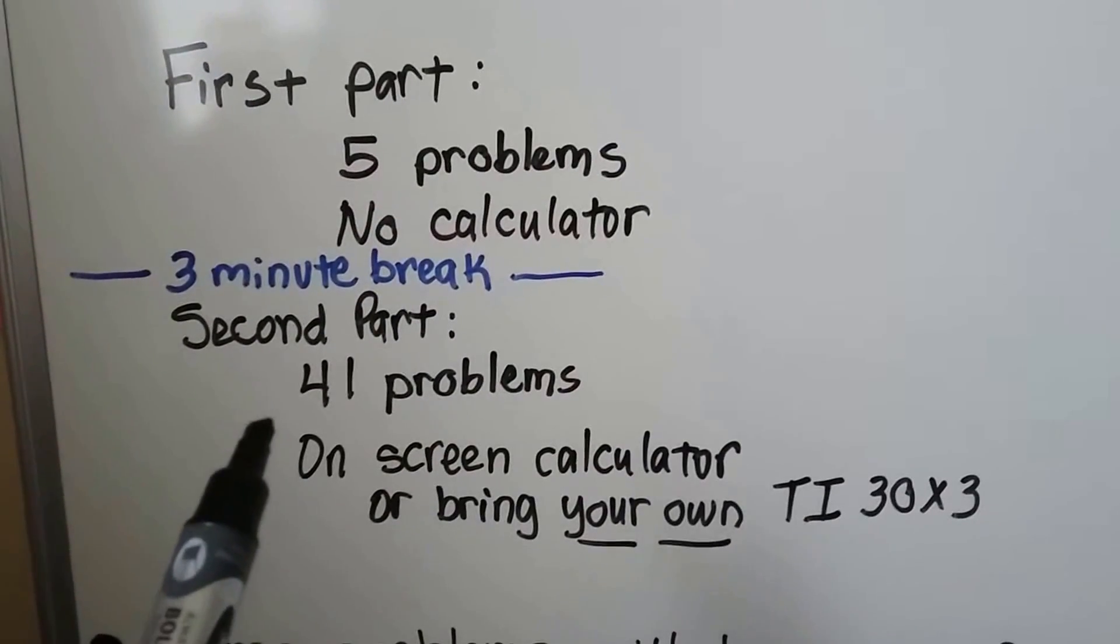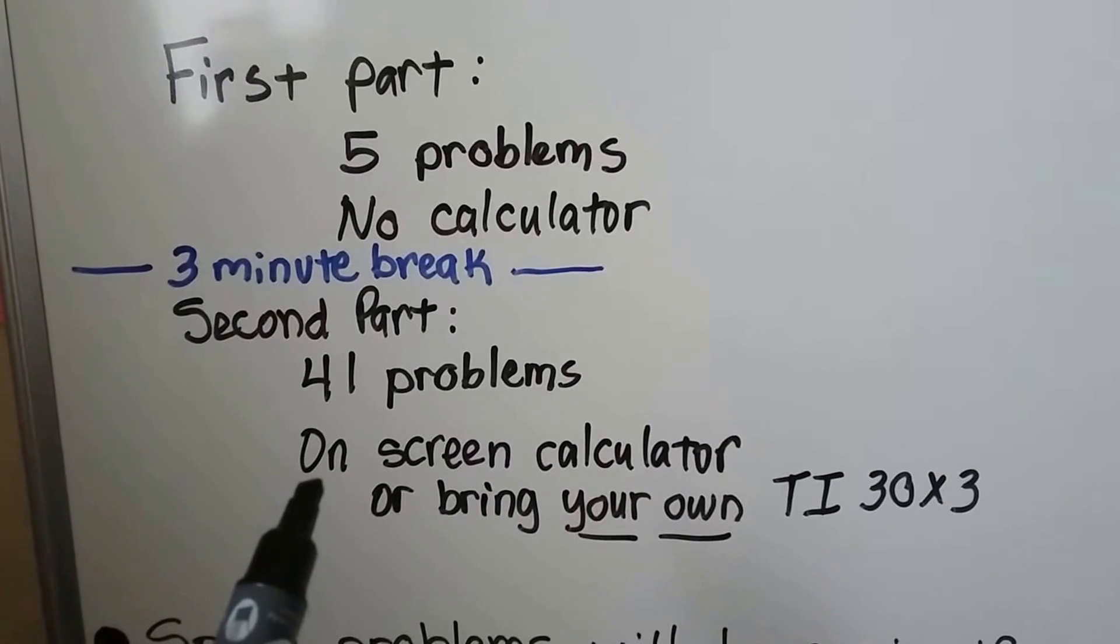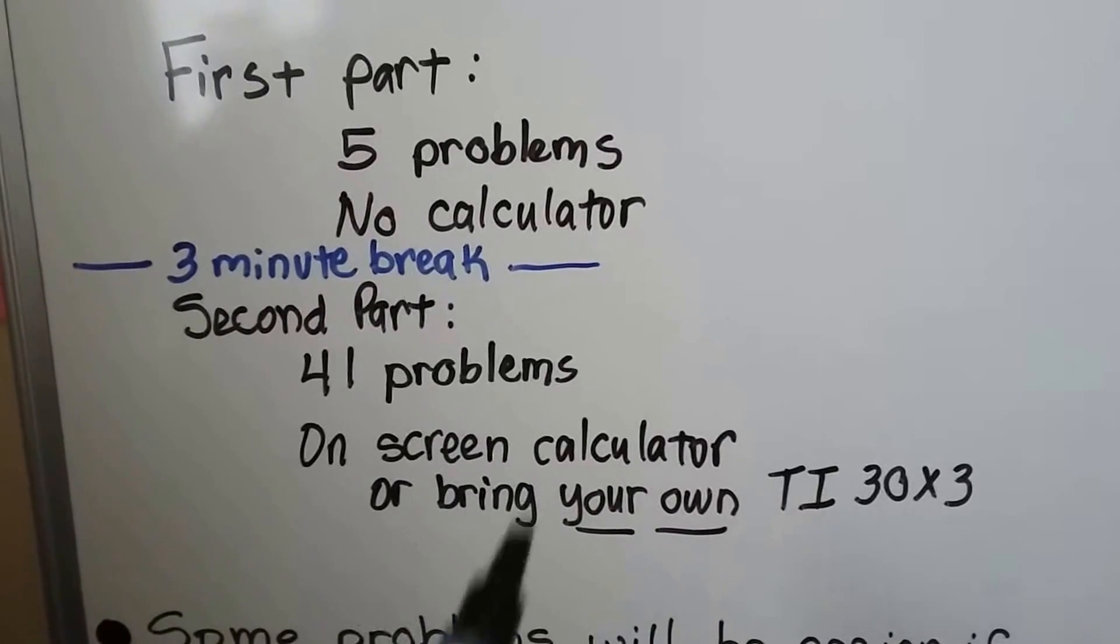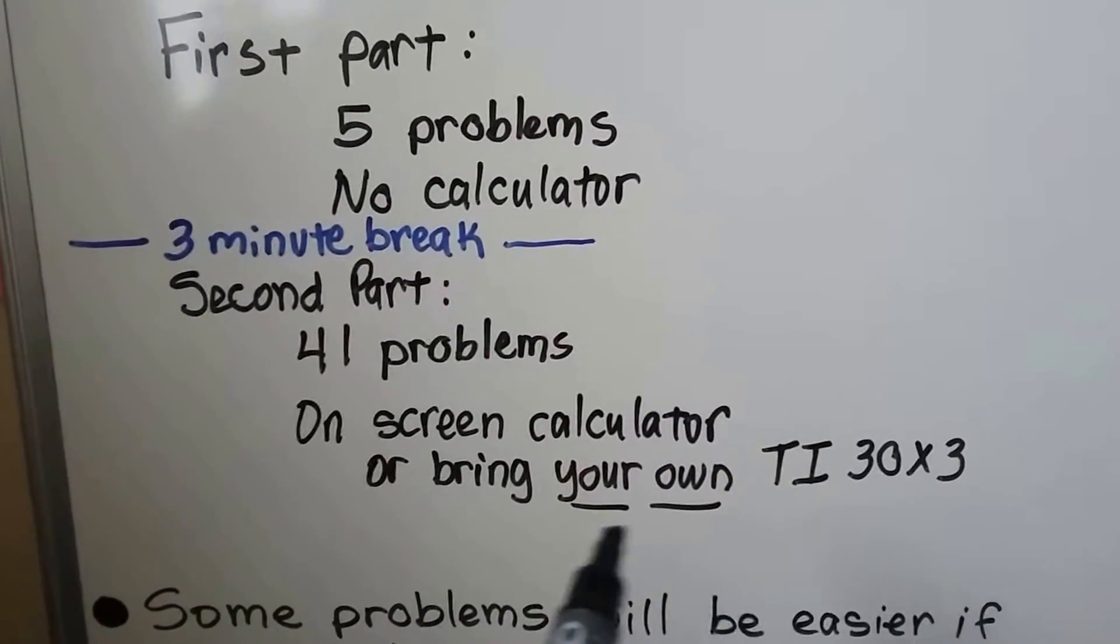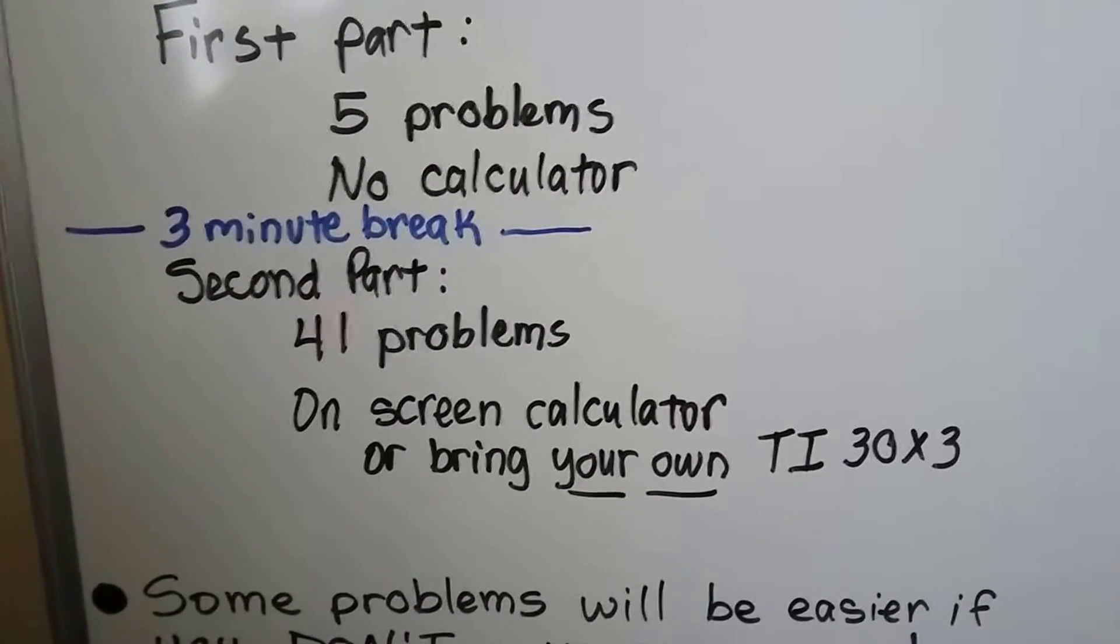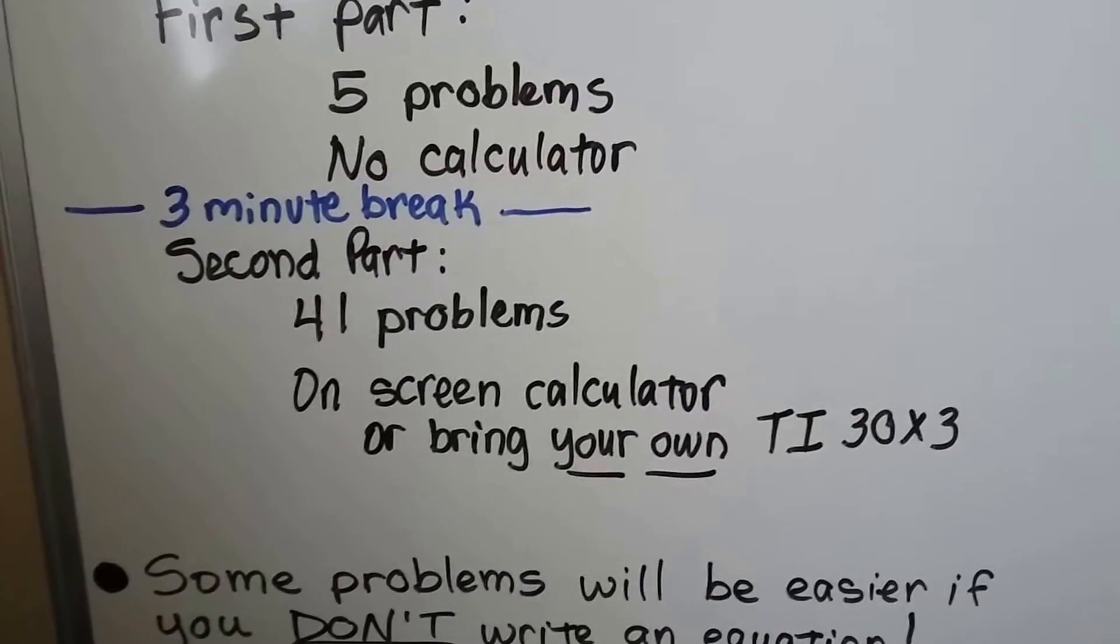There's 41 problems in the second part. You're allowed to use an on-screen calculator, or you could bring your own Texas Instrument 30X3, which I would advise doing because if you have your own, you can practice with it at home before the test and learn how to use it.